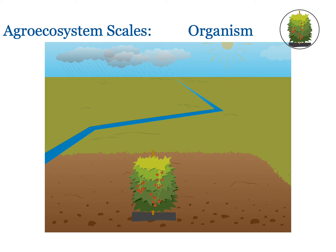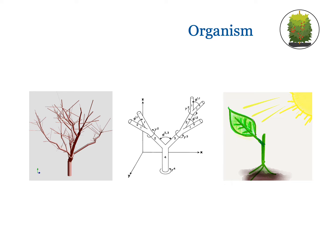An organism is an individual form of life, like this individual tomato plant. Organisms occurring in an agroecosystem can include many other plants or animals that are farmed or part of farms. With production in mind, that organism of interest in an agroecosystem tends to be a crop or livestock.